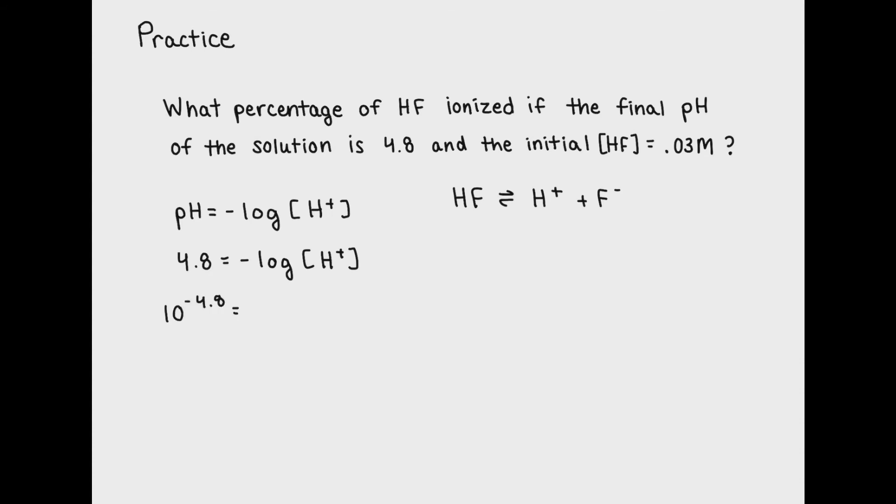To find my concentration of H+ ions in solution, I can take 10 raised to the negative pH. This will give me an ion concentration of 0.0000158. To find percent ionization, I simply divide this number by the initial concentration of HF which is 0.03 molar.